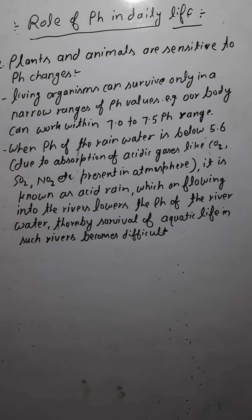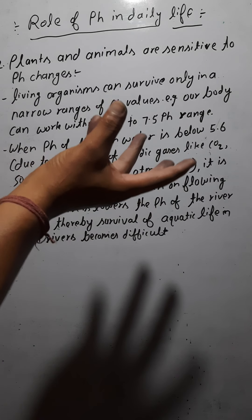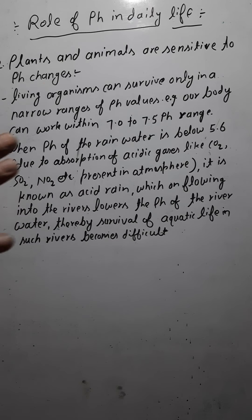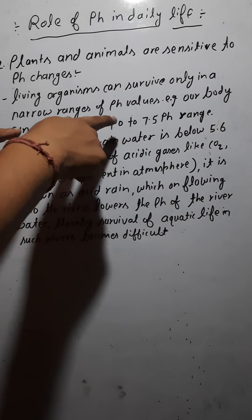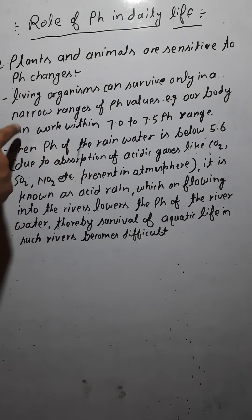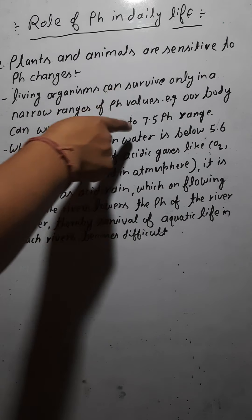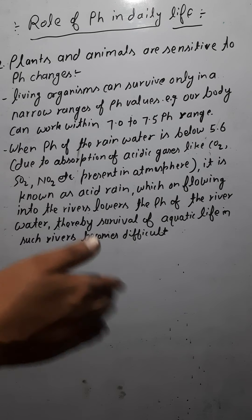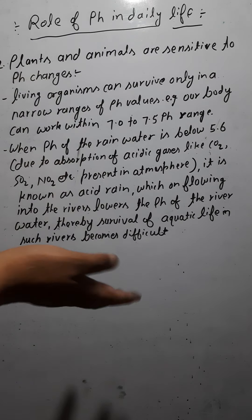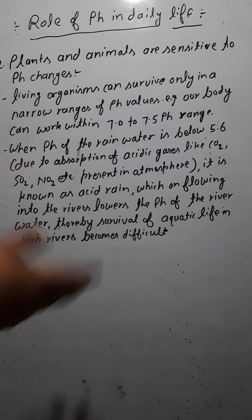The second role of pH in daily life: plants and animals are sensitive to pH values. Living organisms can survive only within a narrow range of pH values. For example, human beings are comfortable when body pH ranges from 7.0 to 7.5. If it increases or decreases beyond this range, we are not comfortable.